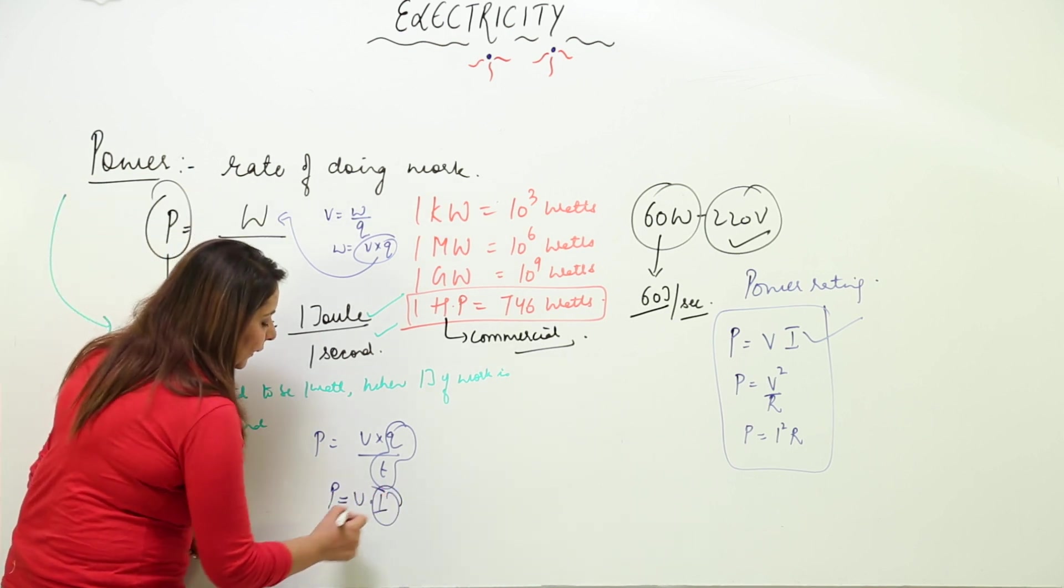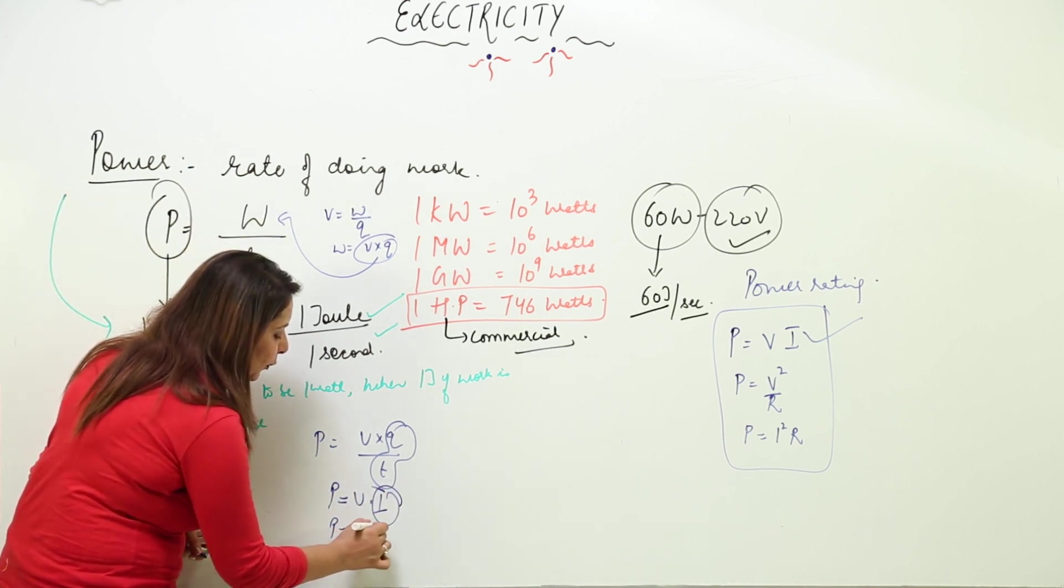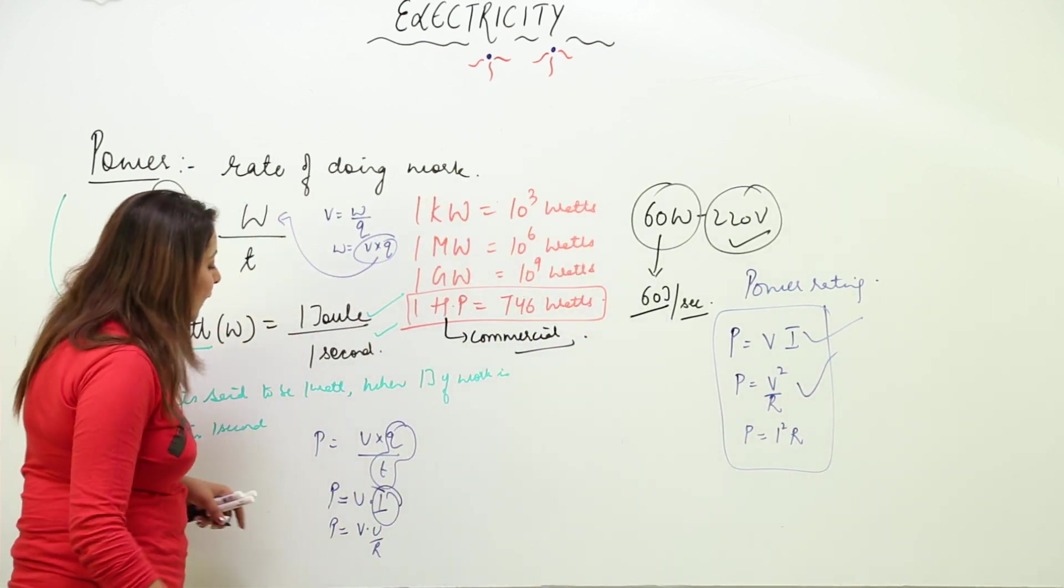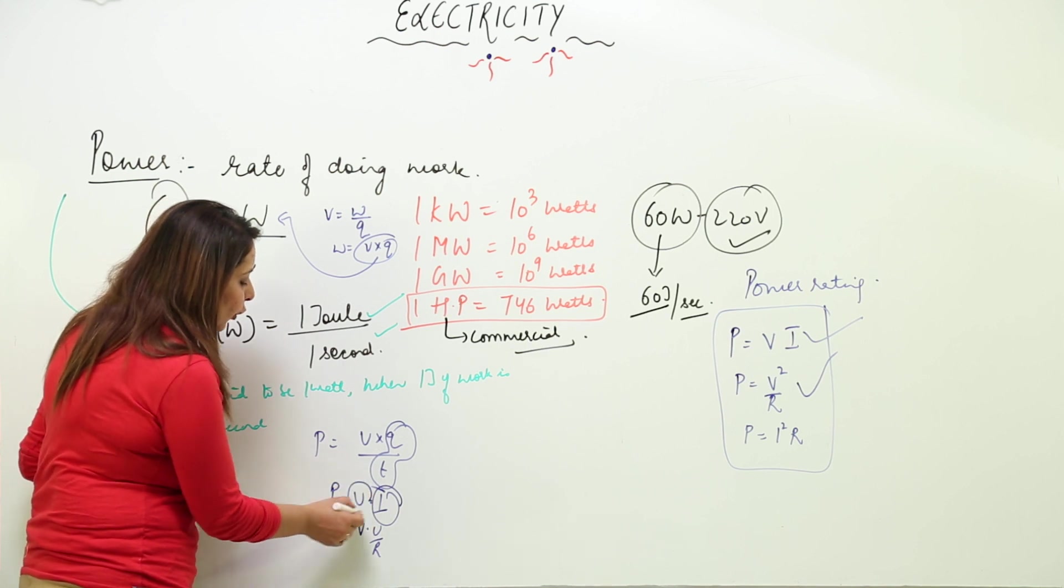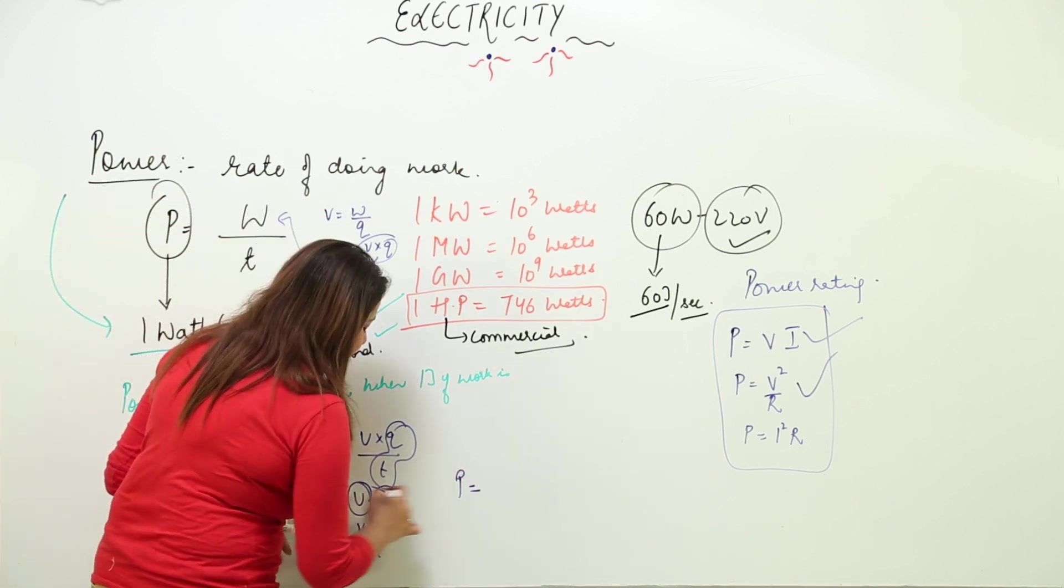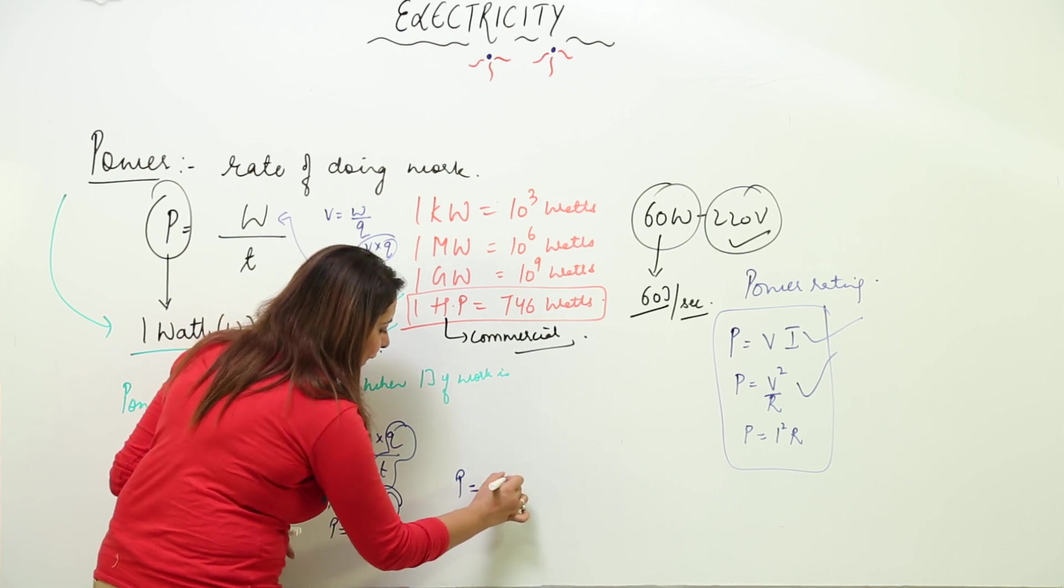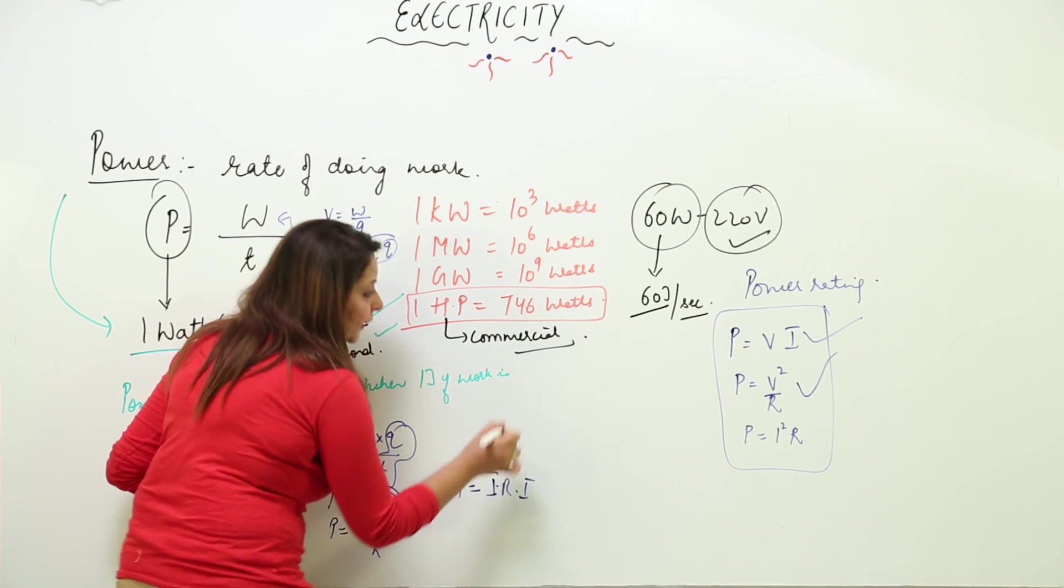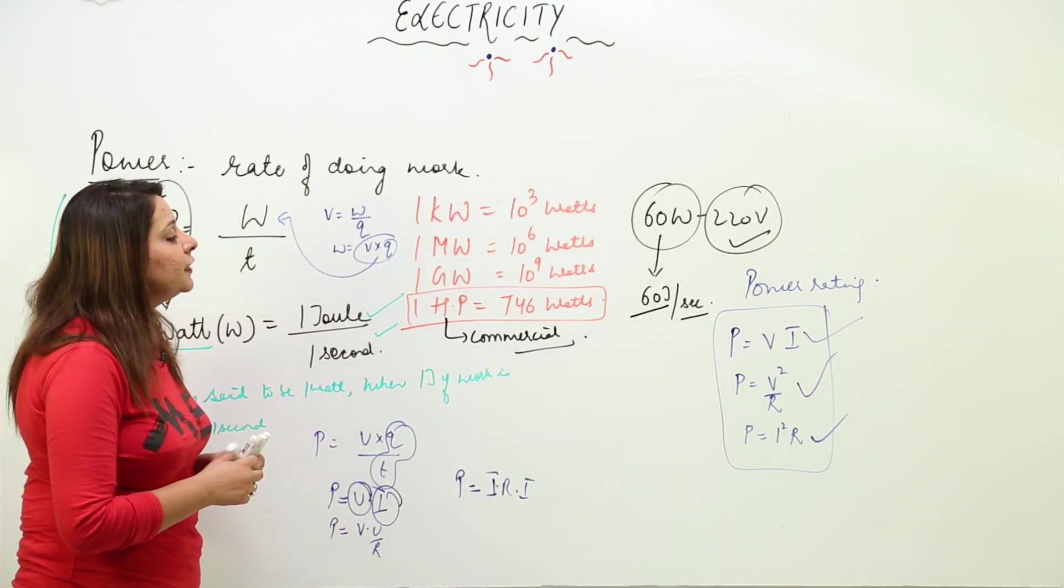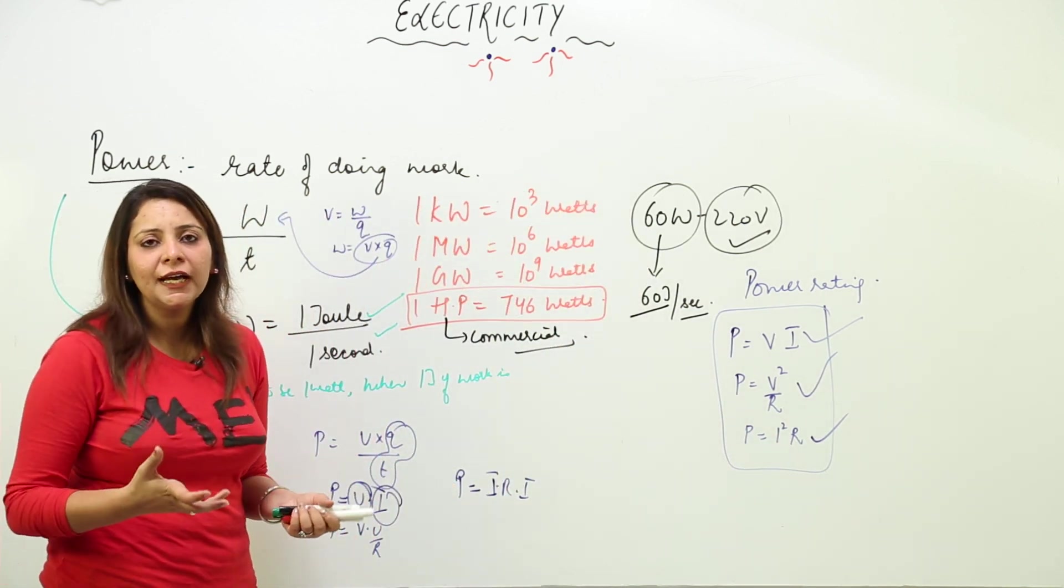For P = V²/R, put I = V/R into P = VI to get this formula. For P = I²R, substitute V = IR into P = VI, giving P = I × IR = I²R. These are the three formulas you use to calculate power.